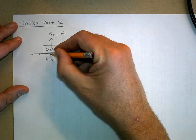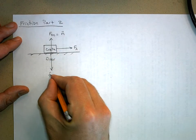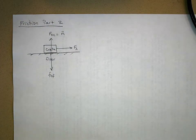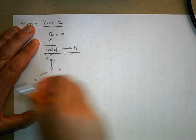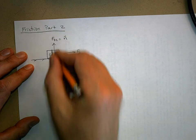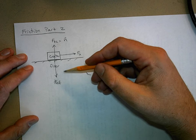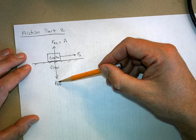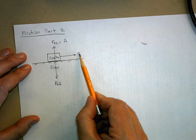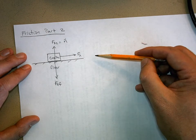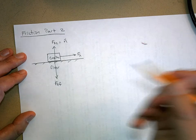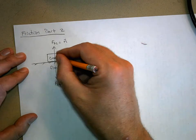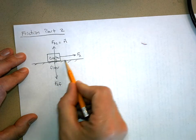And here we have the force of the crate on the floor. This is Newton's third law: for every force on one object, there's an equal and opposite force on another object somewhere in the universe. Here's an applied force — that applied force is on another object out here somewhere, it could be a person pulling on a rope or whatever. But now there's another interaction between the floor and the crate.